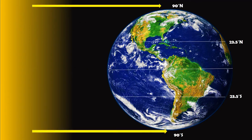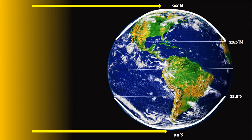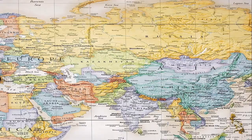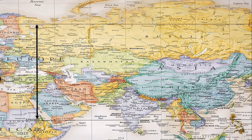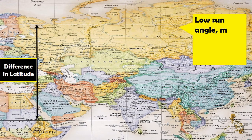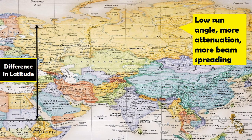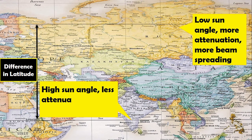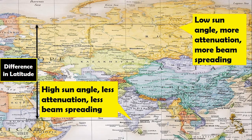And for locations which are north of 23.5 degrees north latitude or south of 23.5 degrees south latitude, the sun is never directly overhead or at a 90 degrees angle. These areas receive less insolation. So because of their differences in latitude alone, Russia or Finland have lower sun angle, more attenuation, more beam spreading, and less intense sunlight than India or Thailand.